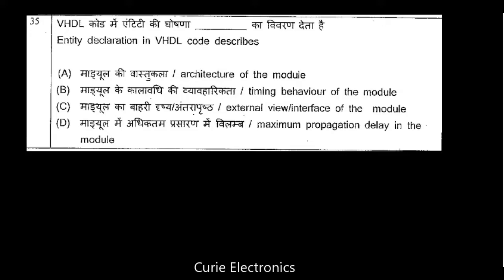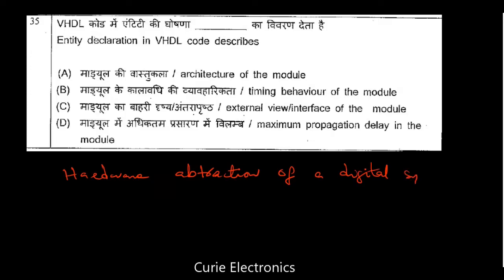Question number 35: Entity declaration in VHDL code describes — what is entity? Entity is the hardware abstraction of a digital system. It could be a single gate or a multiplexer — that is called an entity.